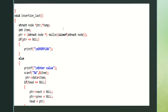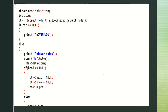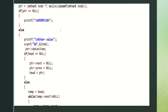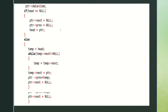Next is insertion last. Struct node ptr and temp — temp is used here. Int item — ptr is allocated with some memory and a node is created. If ptr is equal to null, printf overflow, then we can't insert. It jumps to the else statement. Printf: enter value — the user should enter the value. Ptr data is equal to item. If head is equal to null, which means the list does not contain any elements, then ptr next is null, ptr previous is null, head is equal to ptr — only one element is present.